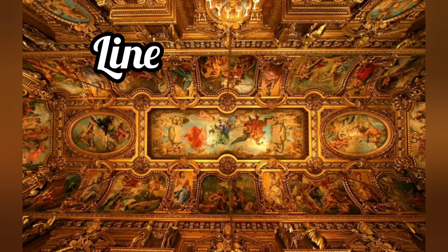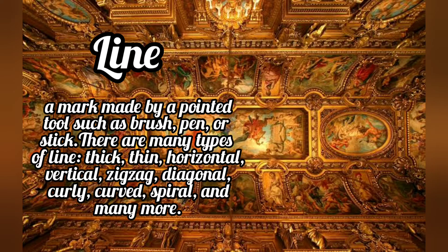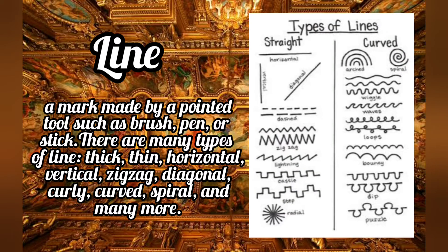First is line. It is a mark made by a pointed tool such as a brush, pen, or stick. There are many types of line: thick, thin, horizontal, vertical, zigzag, diagonal, curly, curved, spiral, and many more.